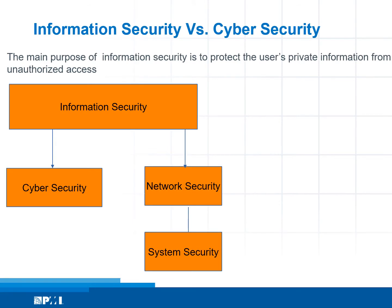Information security versus cyber security. The main purpose of information security is to protect the user's private information from unauthorized access. Information security is a container and it consists of cyber security, network security, and system security.